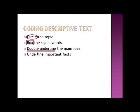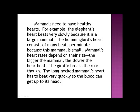So here we go. We have a paragraph here. While I read, think about what the topic is going to be — what word do you see over and over? Mammals need to have healthy hearts. For example, the elephant's heart beats very slowly because it is a large mammal. I've already seen 'mammal' twice — that might be the topic. The hummingbird's heart consists of many beats per minute because this mammal is small. There it is again. Mammals' heart rates, again, depend on their size.